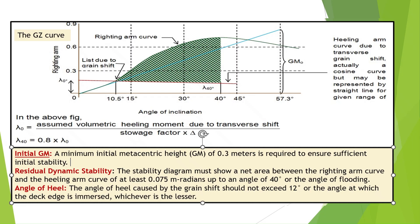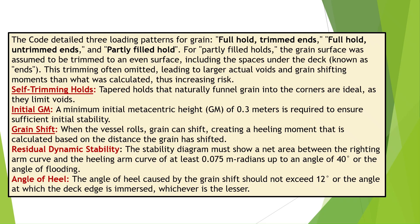When the vessel rolls, grain can shift, creating a heeling moment that is calculated based on the distance the grain has shifted. Residual dynamic stability requires the stability diagram to show a net area between the righting arm curve and the heeling arm curve of at least 0.075 M radians up to an angle of 40 degrees, or the angle of flooding. The angle of heel caused by the grain shift should not exceed 12 degrees, or the angle at which the deck edge is immersed, whichever is lesser.